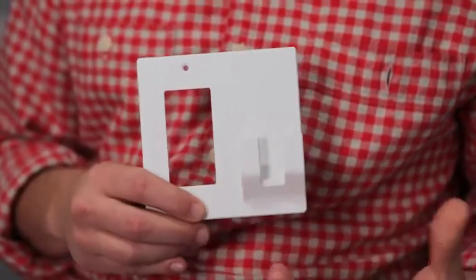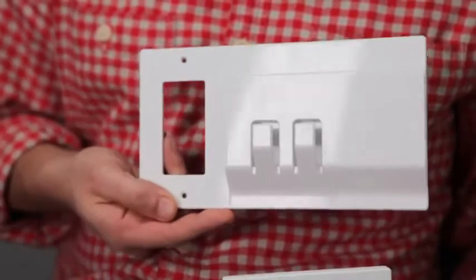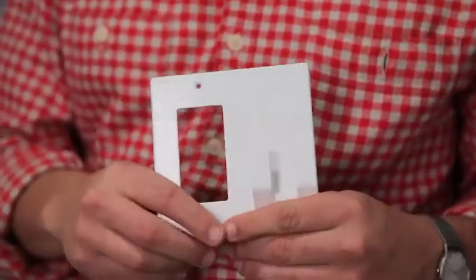So here's WallHub. I have two examples here. This is OneHang and this is Keeper. There are three main types of WallHub which will work for both rocker and toggle switches.